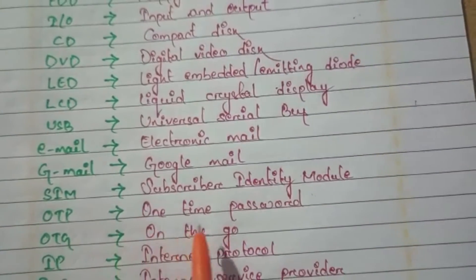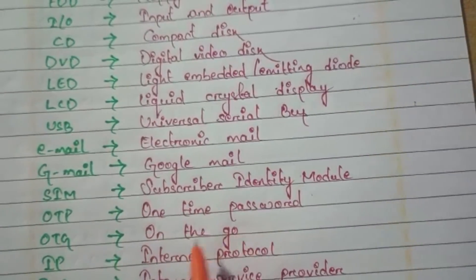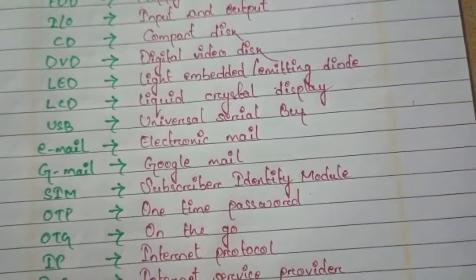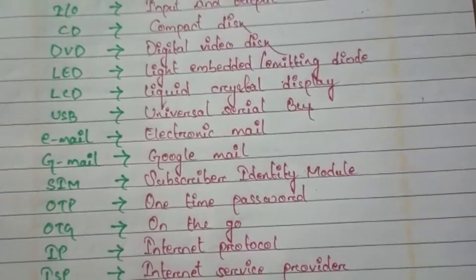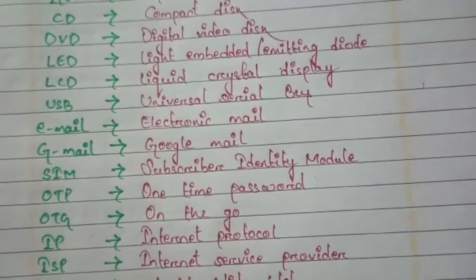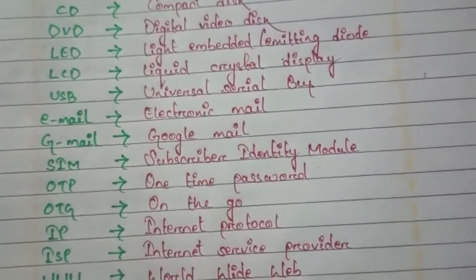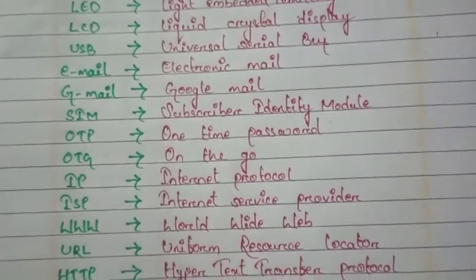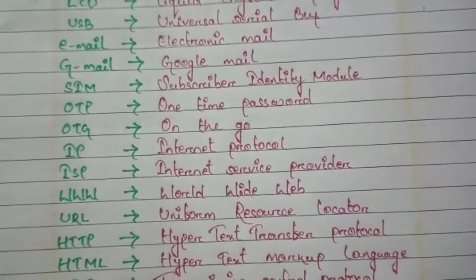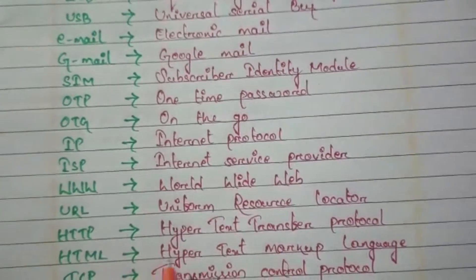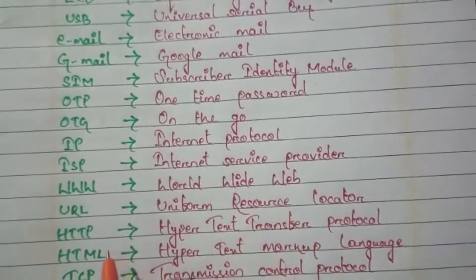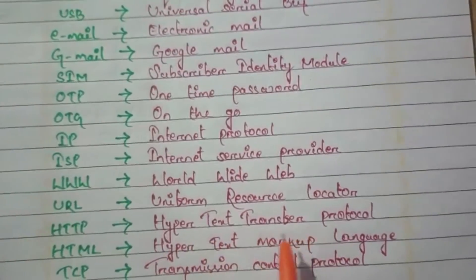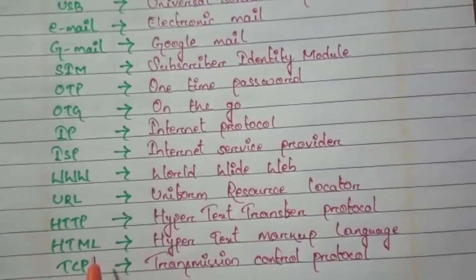OTP - One Time Password. OTG - On The Go. IP - Internet Protocol. ISP - Internet Service Provider. WWW - World Wide Web. URL - Uniform Resource Locator. HTTP - Hypertext Transfer Protocol. HTML - Hypertext Markup Language.